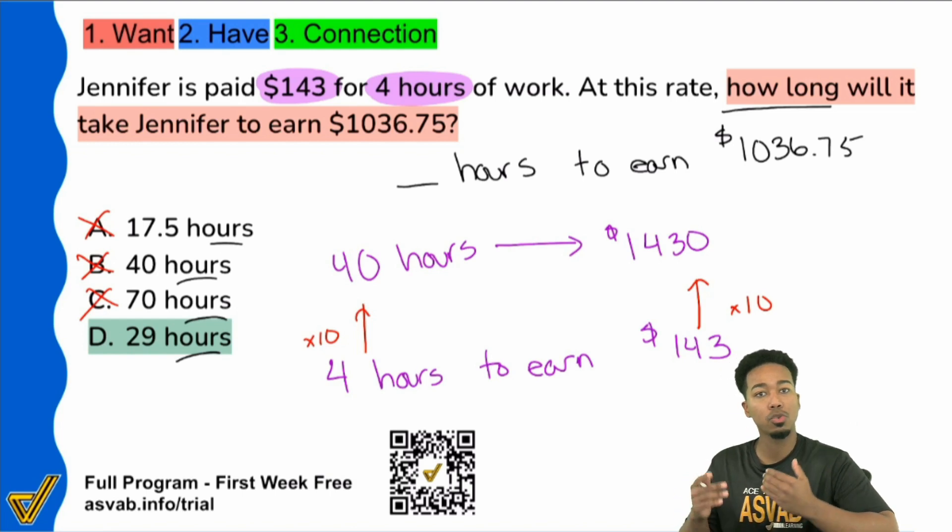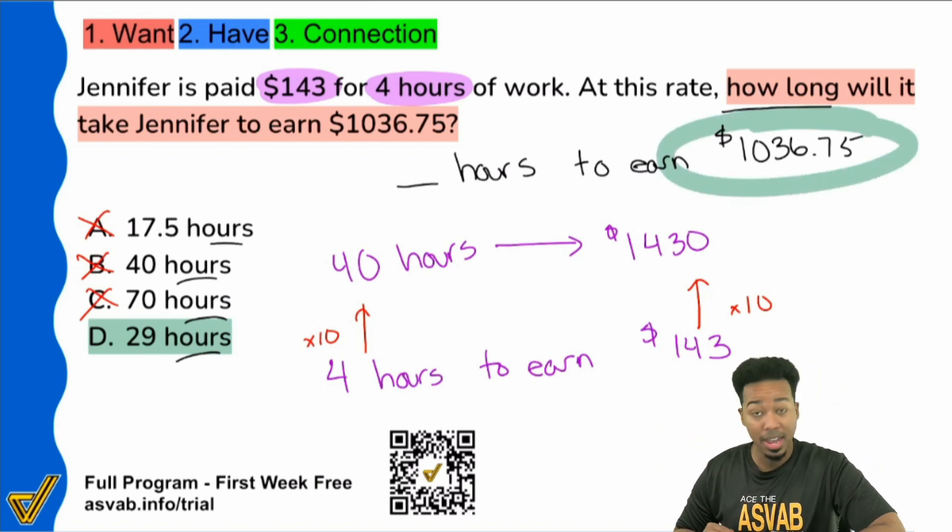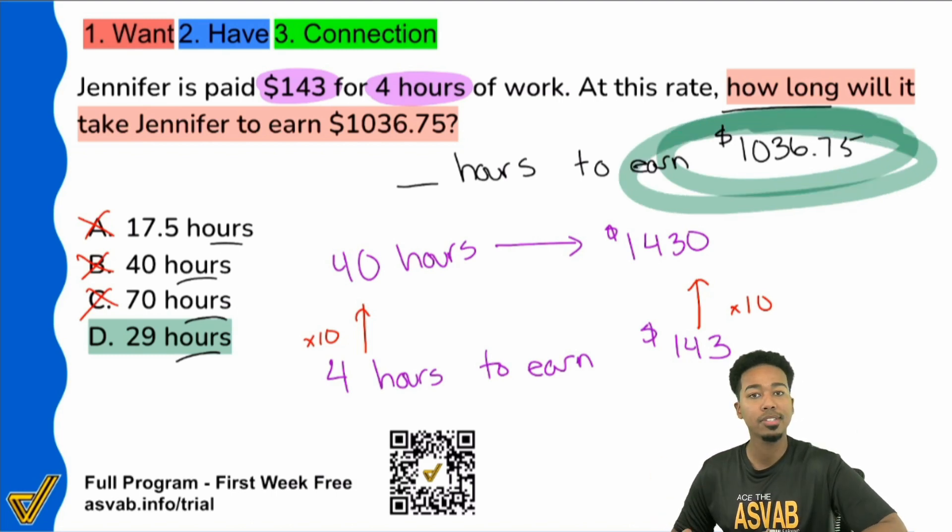And that would make sense because 29 is more than half of 40. So more than 20, less than 40. And that is again, more than 20 hours and then that would be also less than the 40. And that fits.